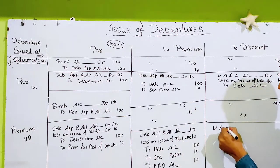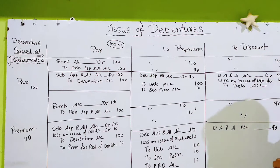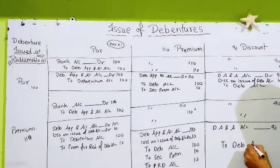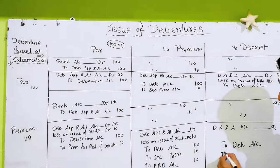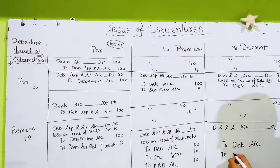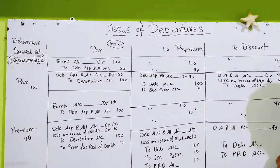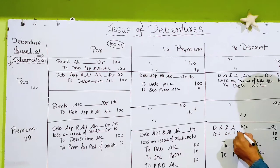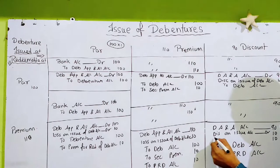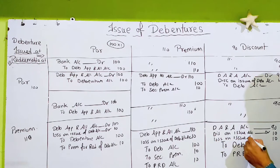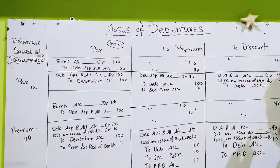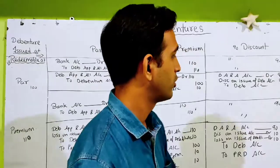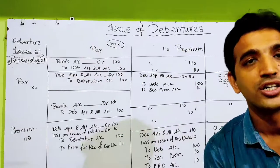Entry 2: Debenture Application and Allotment Account debit, to Debenture Account 100, to Premium on Redemption of Debenture Account 10. 110 की तैयारी कर ली — अब यहां 110 चाहिए, यहां पर नब्बे हैं, तो 10 रुपये का loss और 10 रुपये discount. तो Discount on Issue of Debenture Account debit और Loss on Issue of Debenture Account debit.